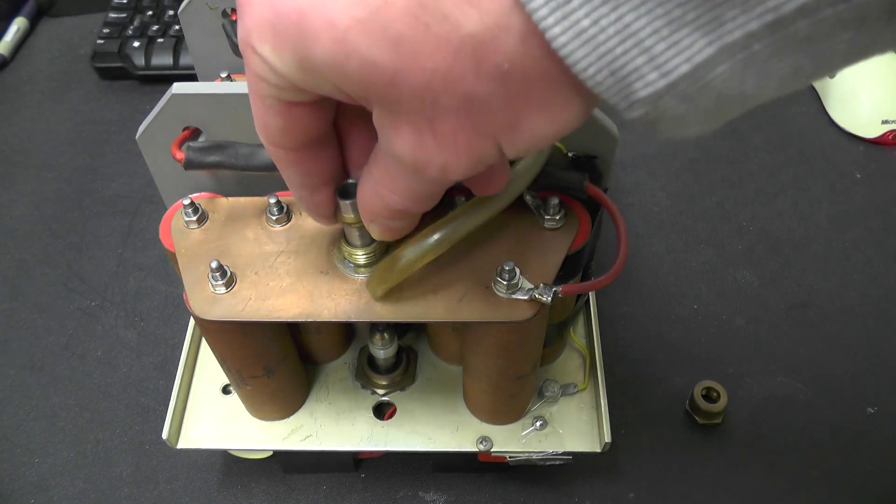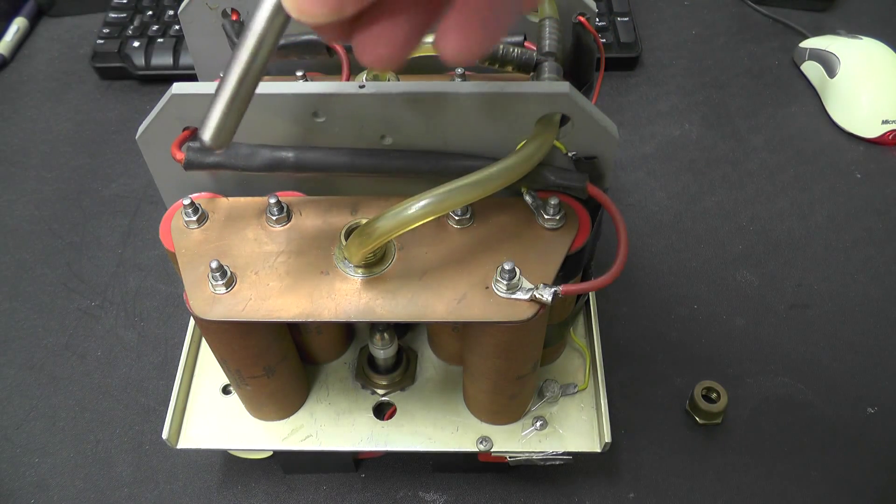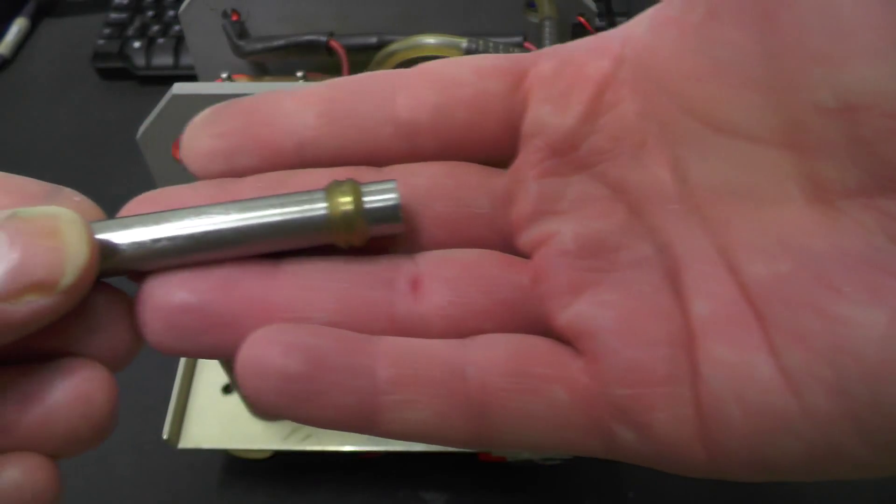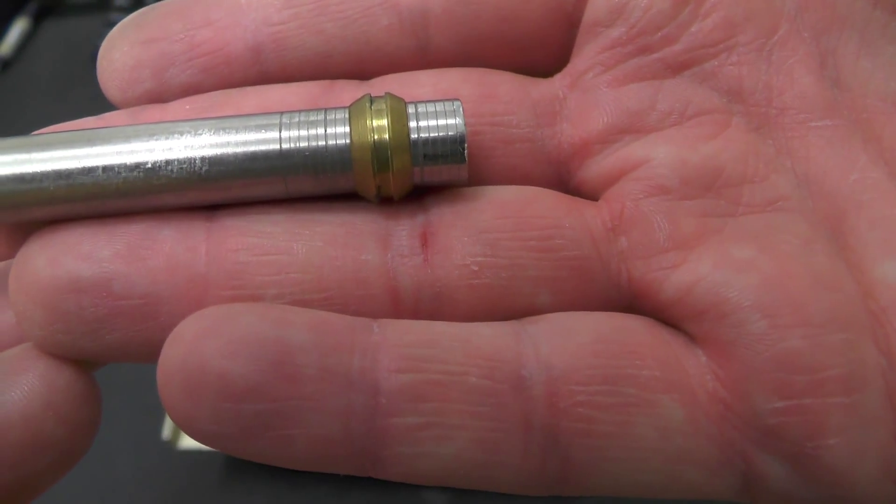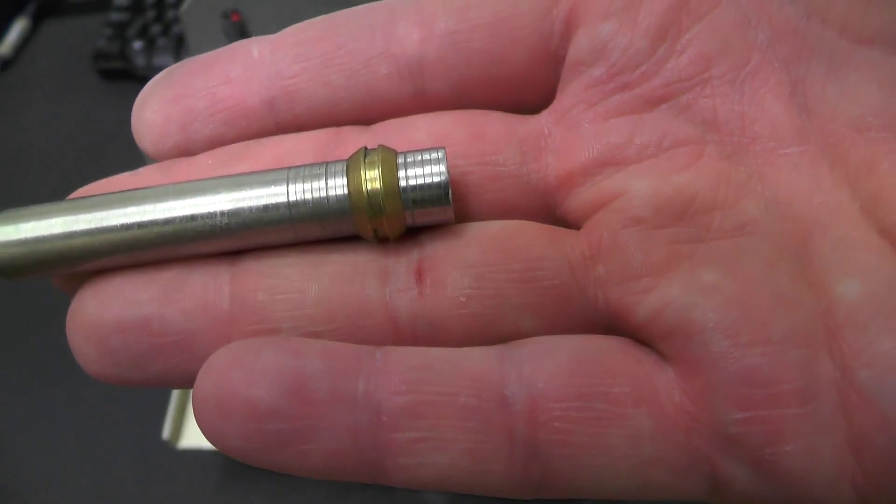This comes off and then you can take out the electrode, and there are actually graduations on it to allow you to adjust it.